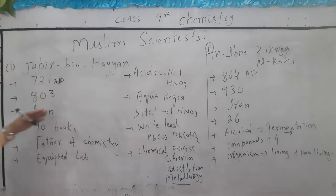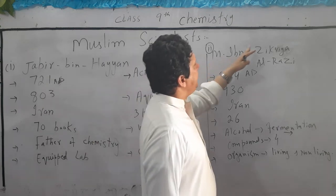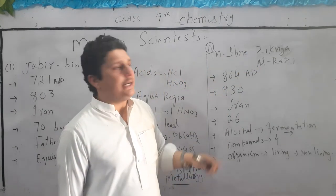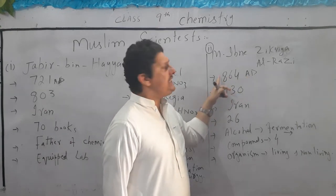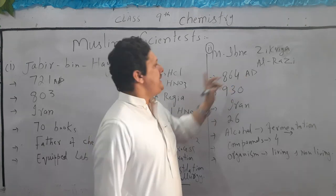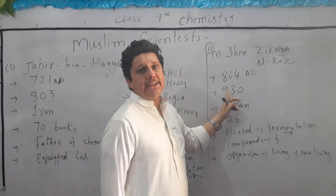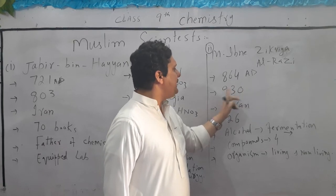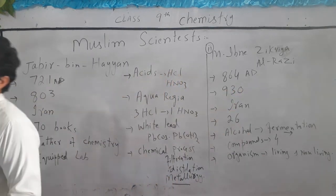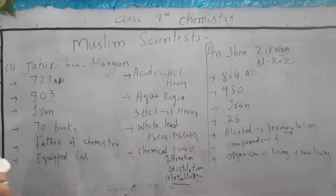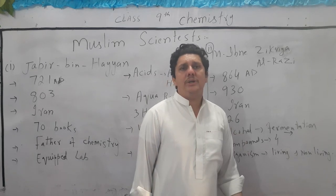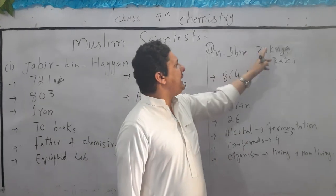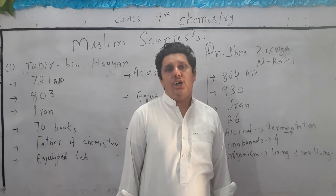So that was about Jabir bin Hayyan. The next Muslim scientist is Muhammad ibn Zakariya al-Razi. His date of birth is 864 AD and his date of death is 930 AD. His place of birth is Iran. He wrote 26 books.